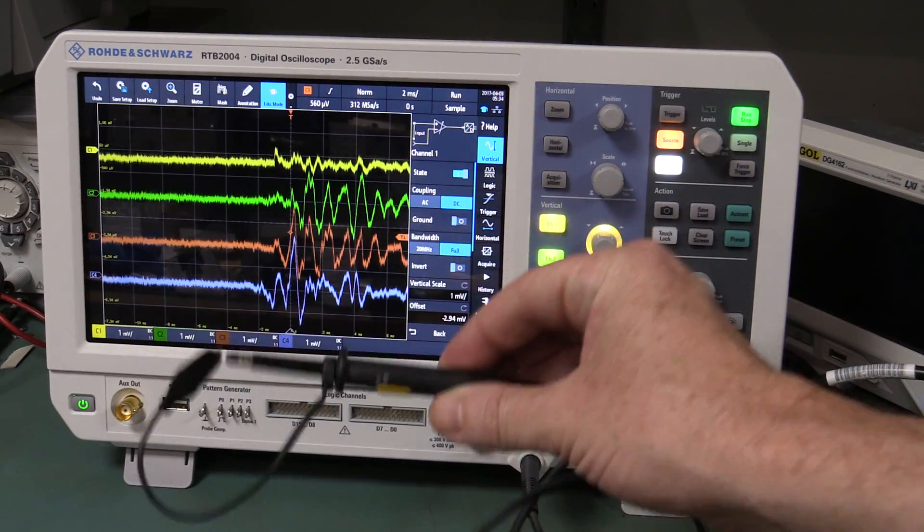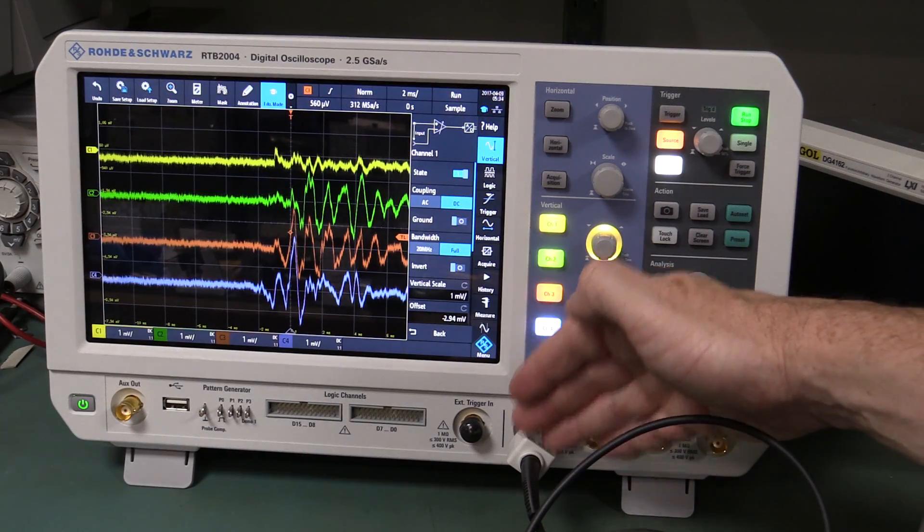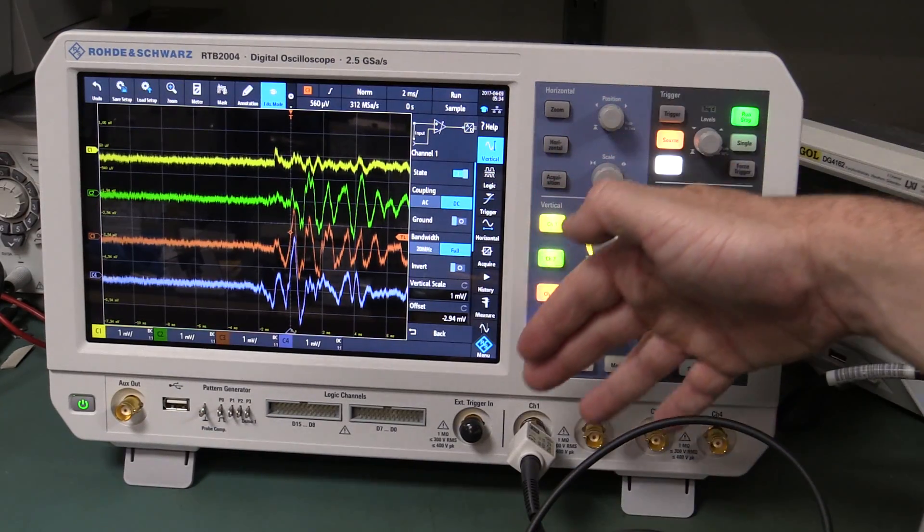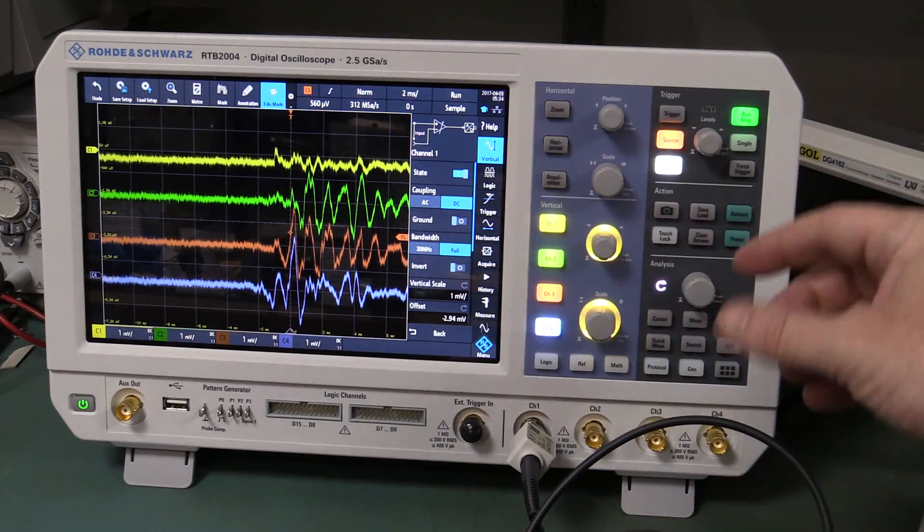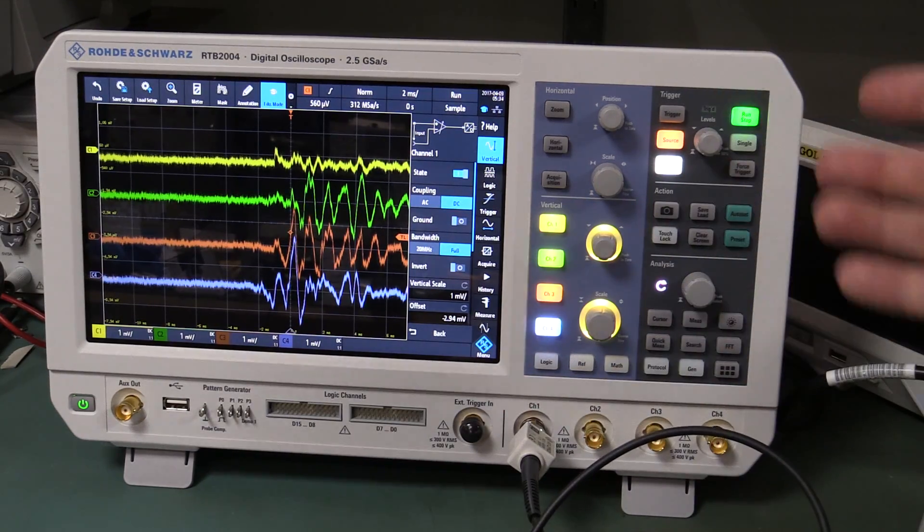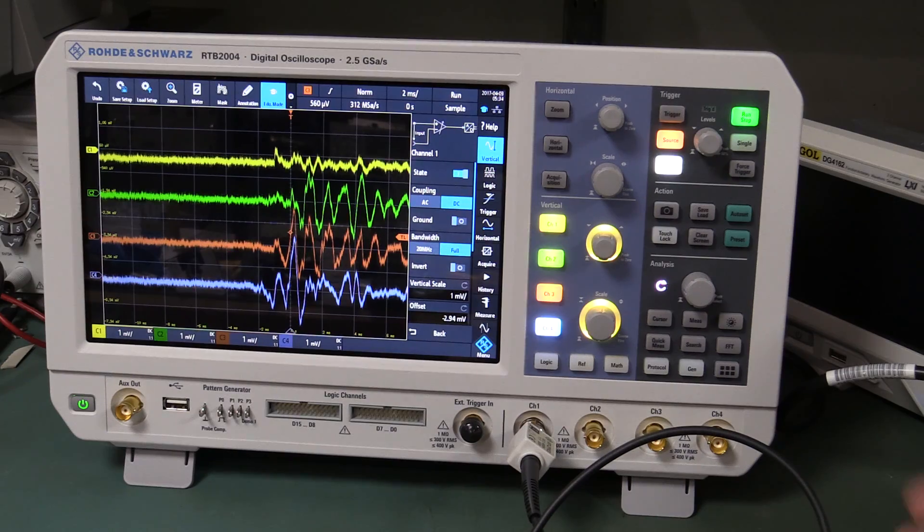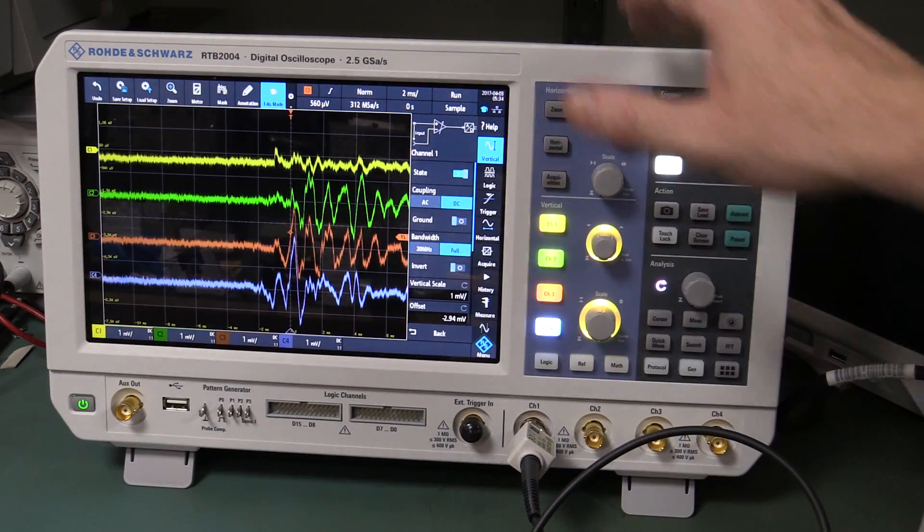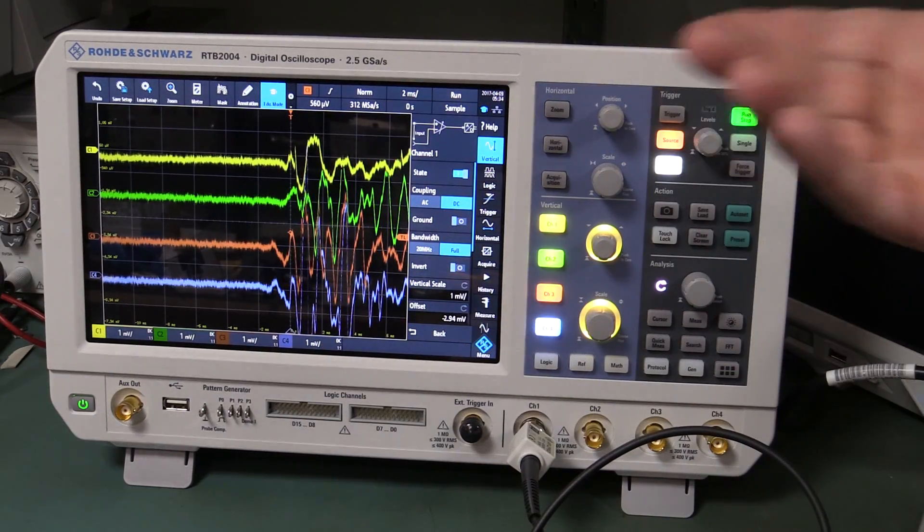You've got the nine meg resistor in here effectively across the offending capacitor inside here. It's loading it down so it's dampening the effect, but it's still not zero.